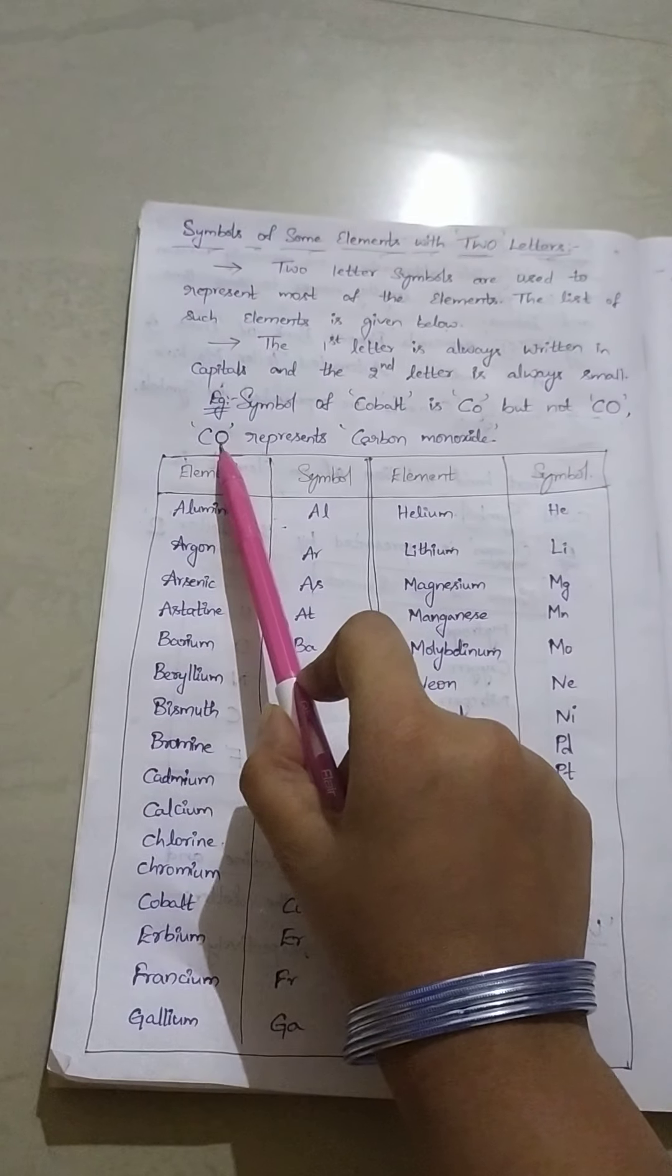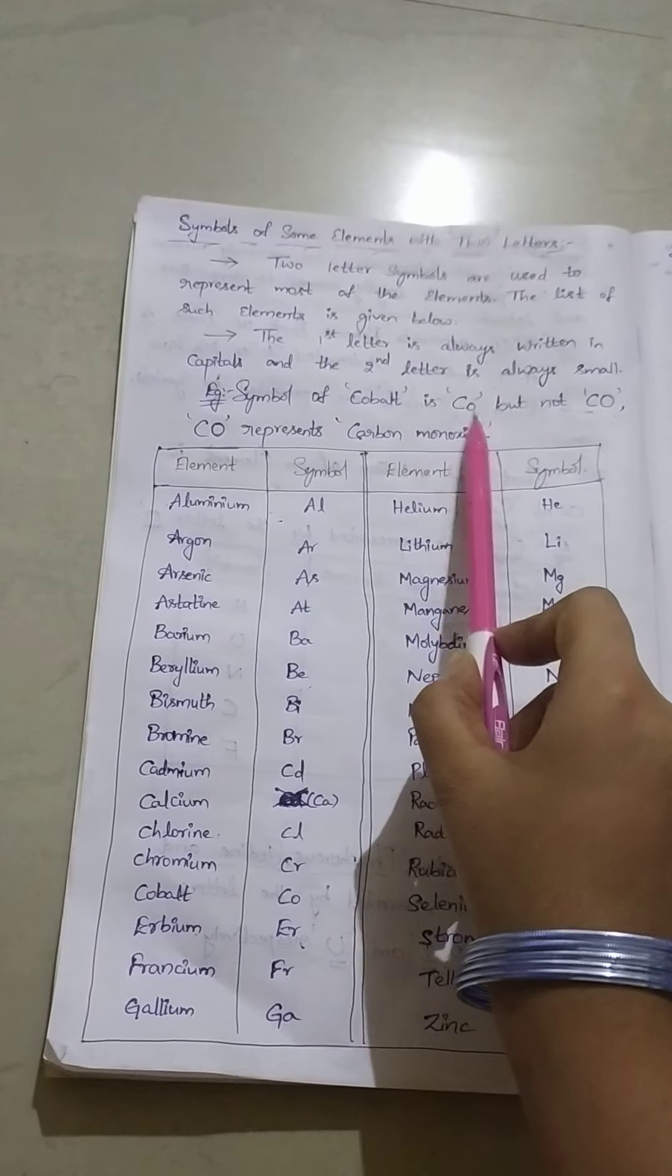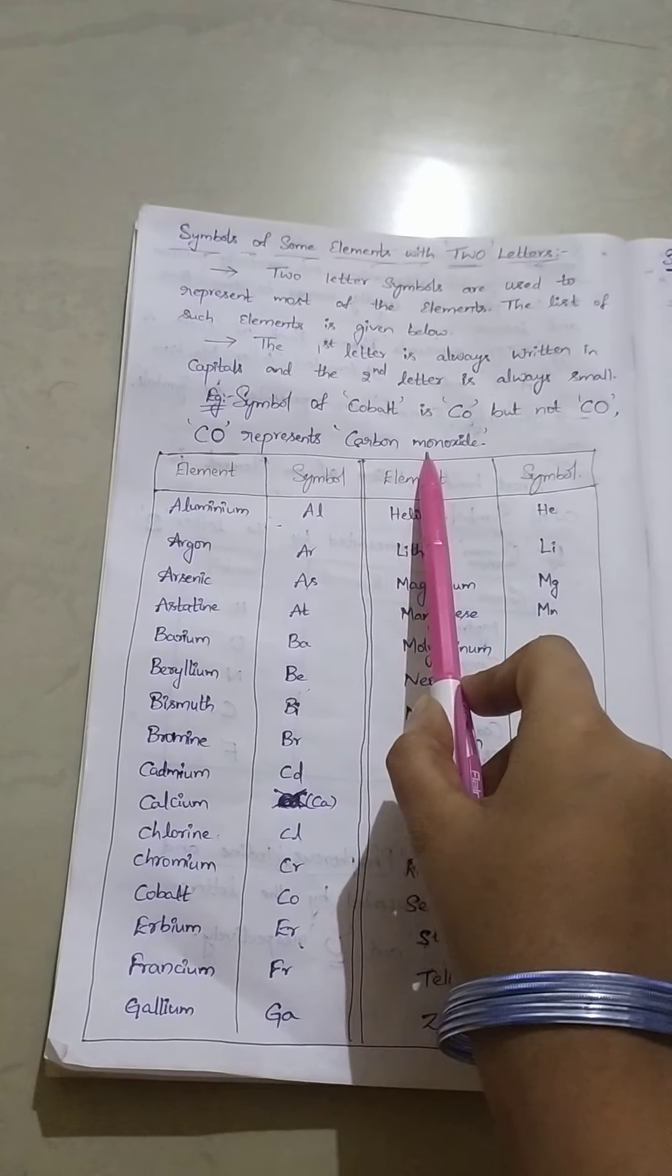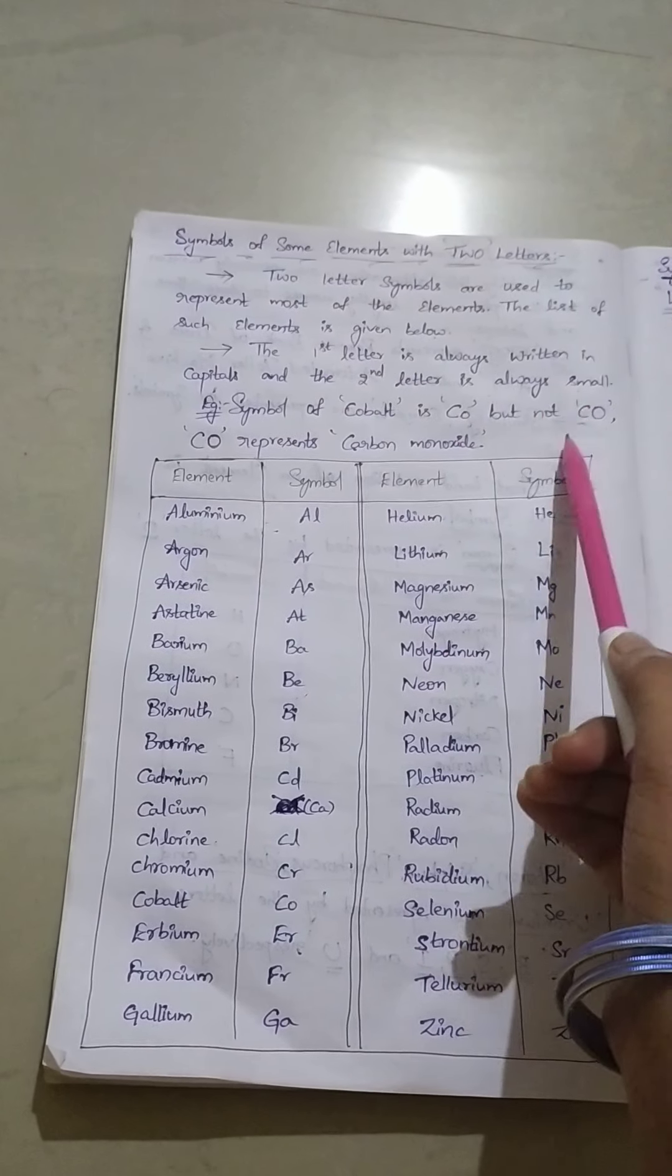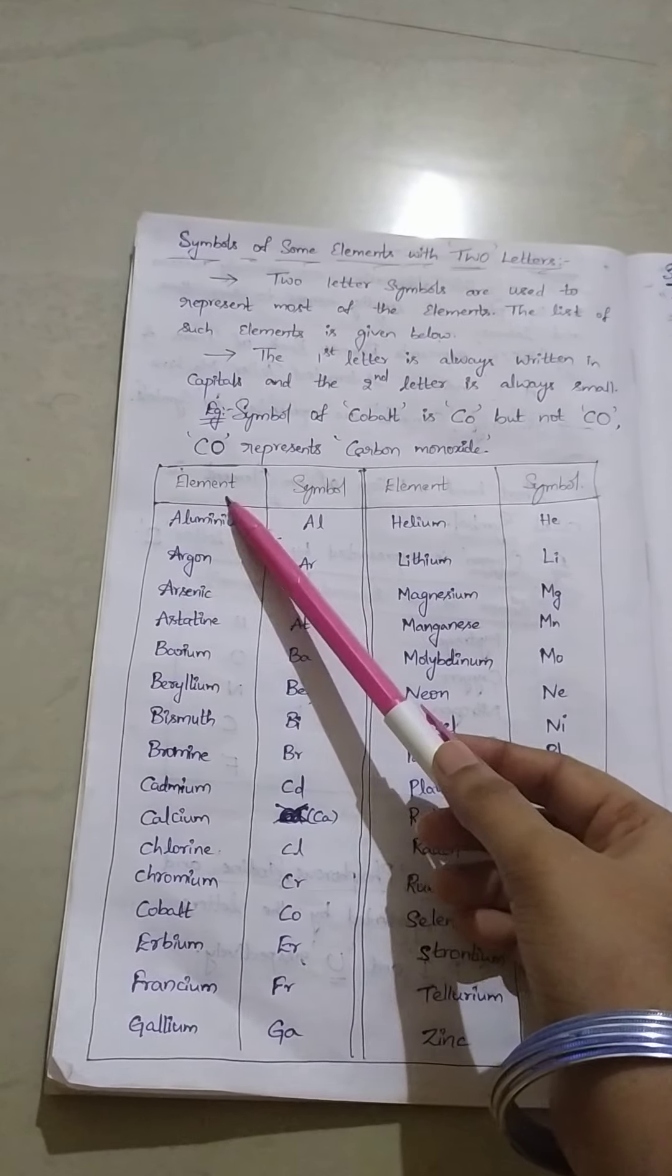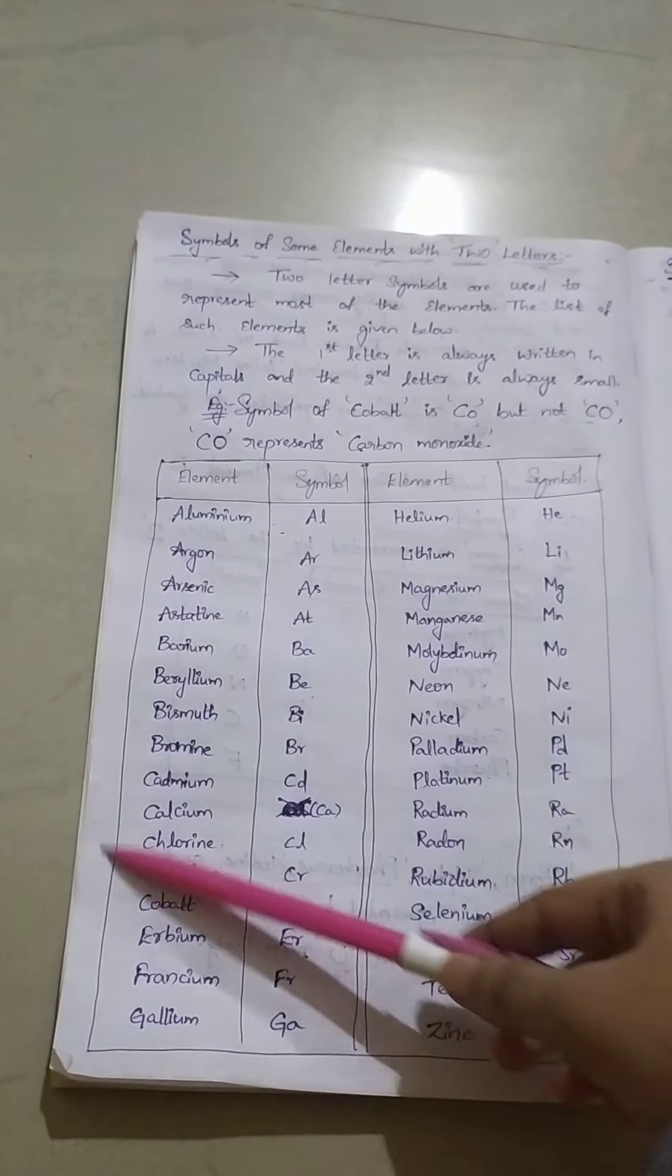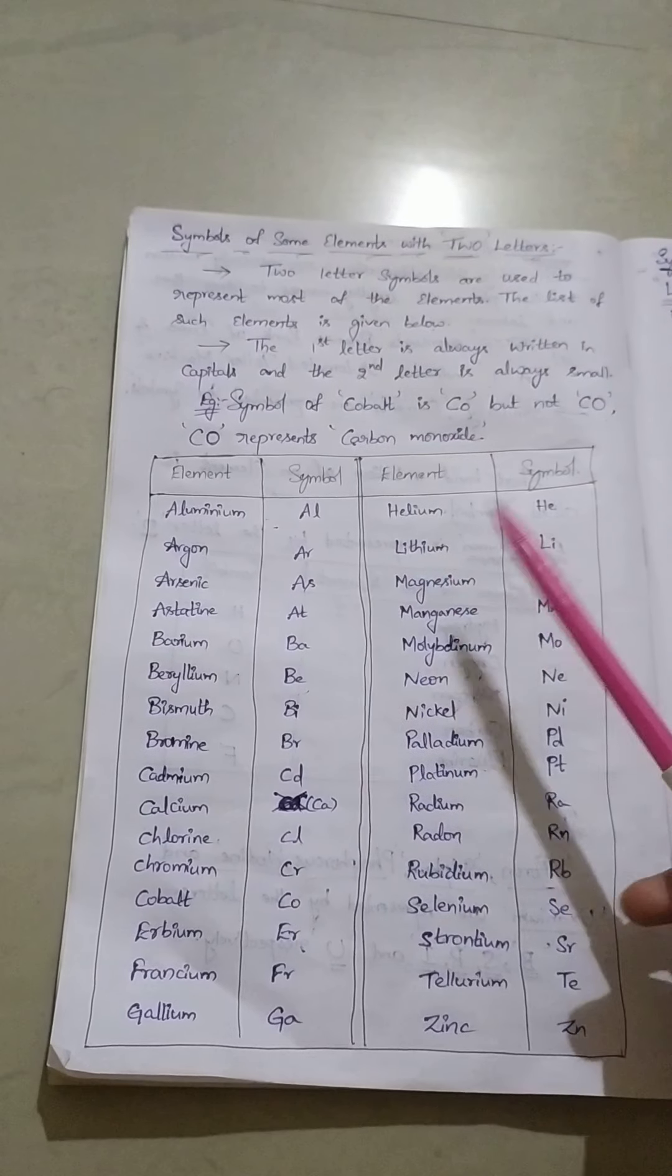Here, capital C small O represents cobalt, whereas capital C capital O represents carbon monoxide. There is a huge difference. The element will differ. So be cautious. And now, here we will see some elements and symbols. I have written elements in one column and symbols in another column.